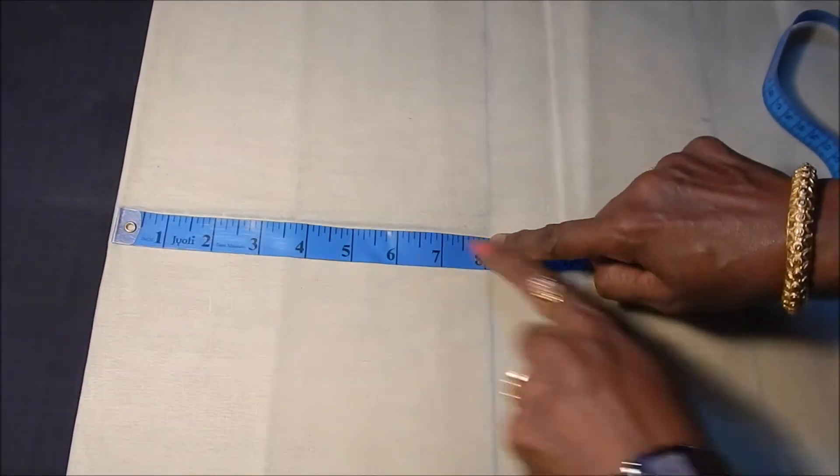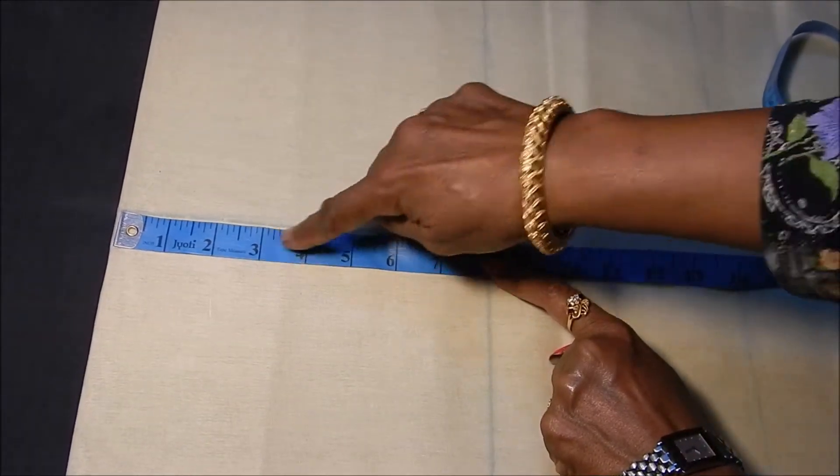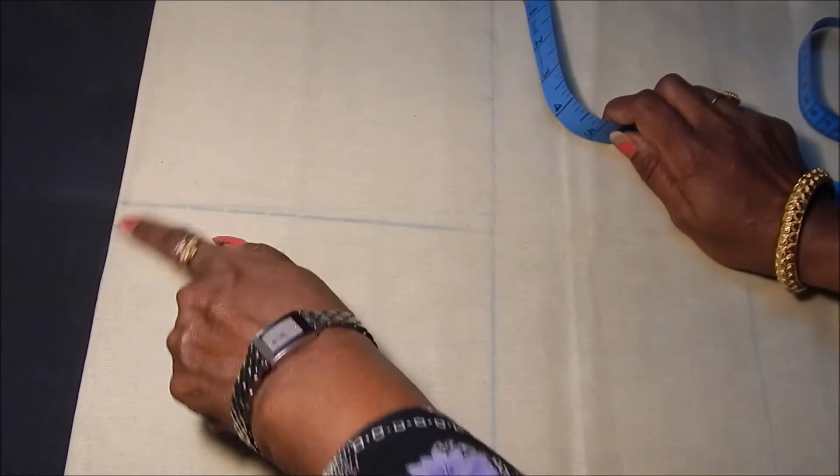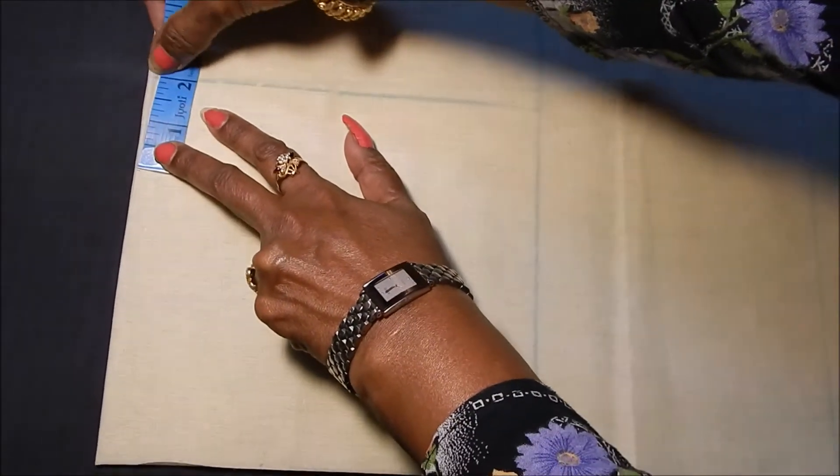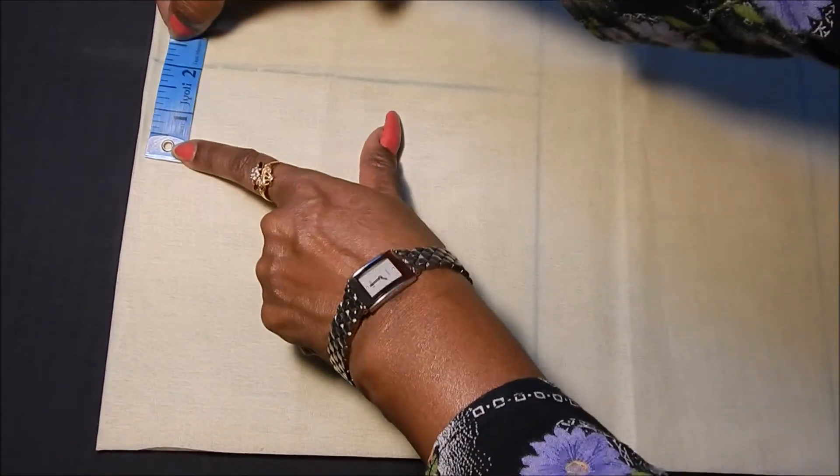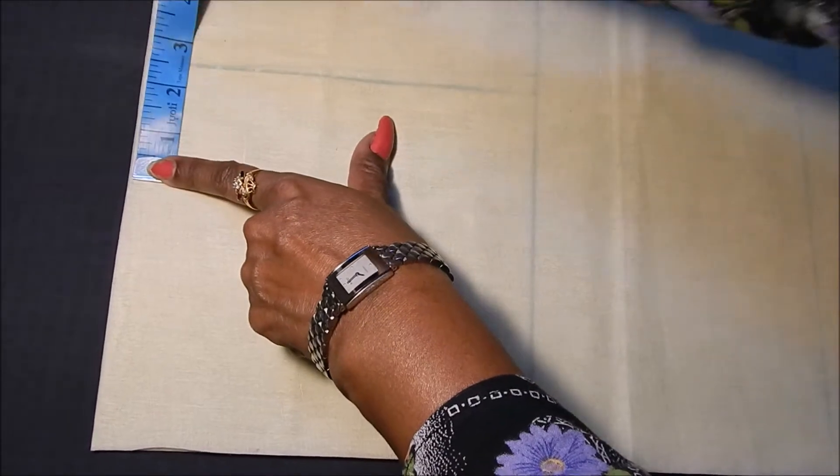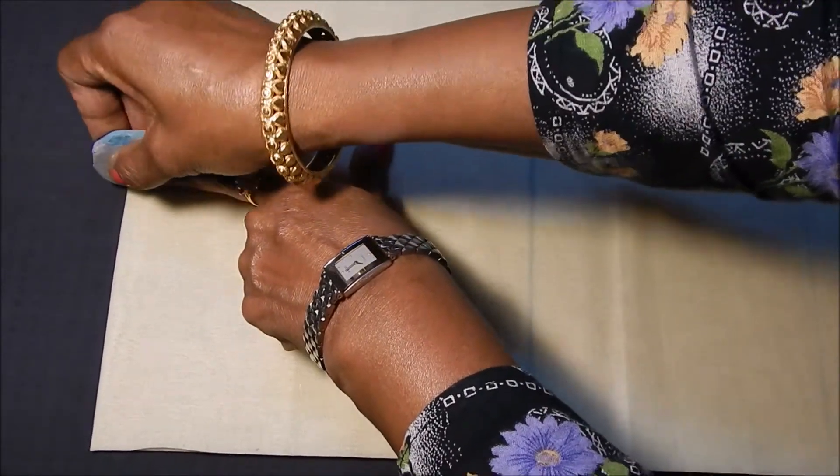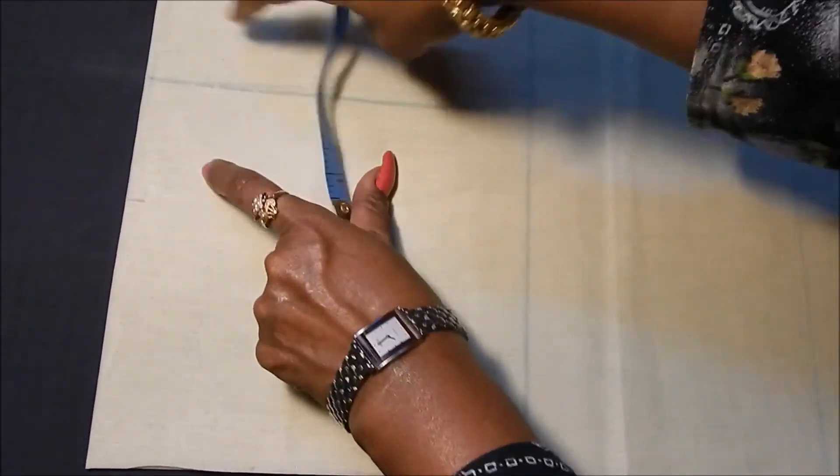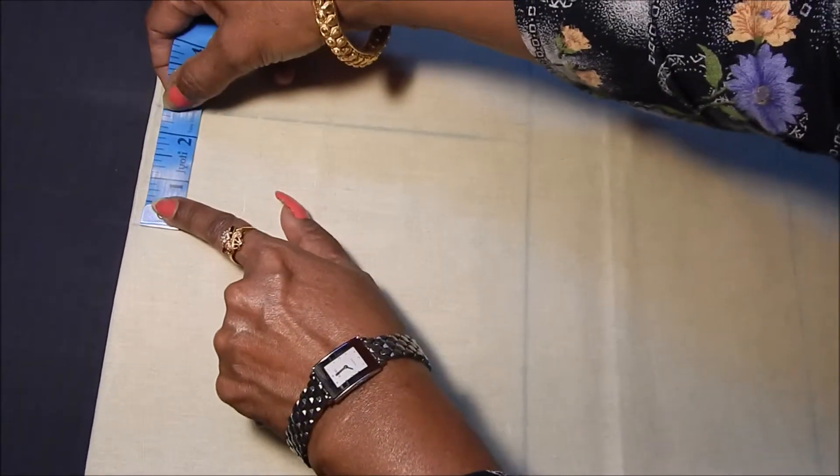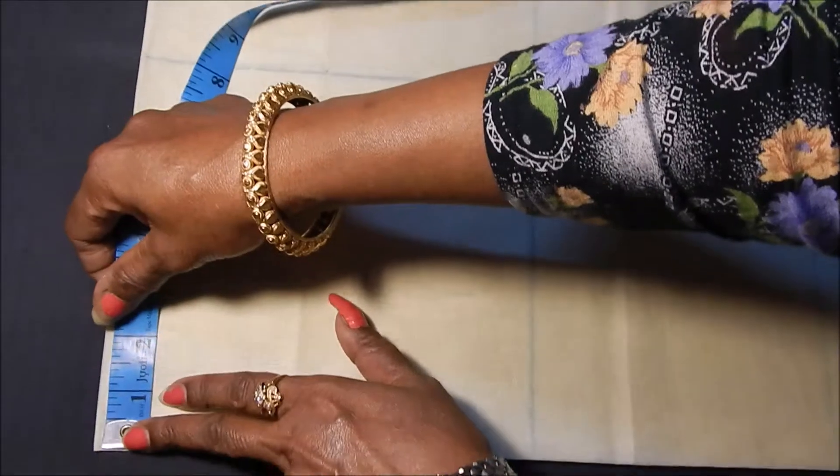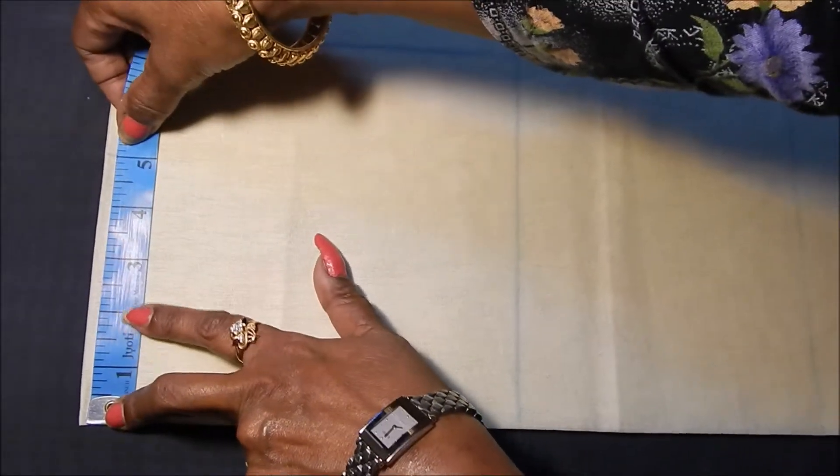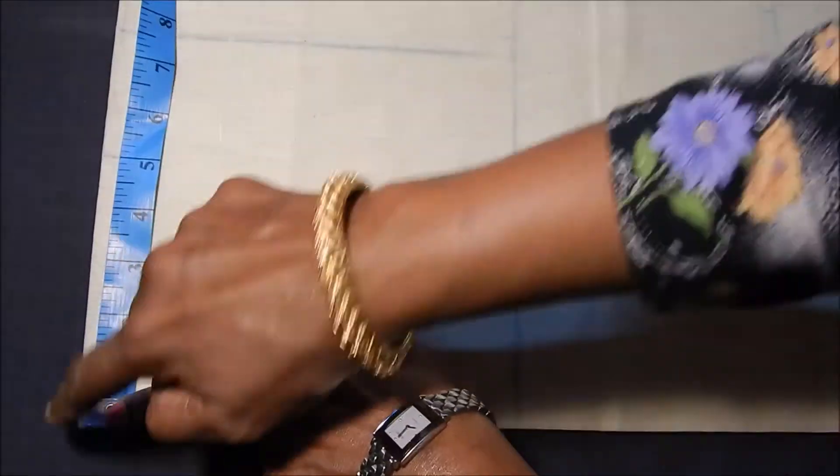Armhole length is eight inches, mark at eight. Shoulder length two inches plus half inch seam allowance, so mark it two and a half inches. As I mentioned earlier, boat neck will have narrow shoulder with wide neck, so mark it two and a half inches shoulder width and neck width will be five inches.